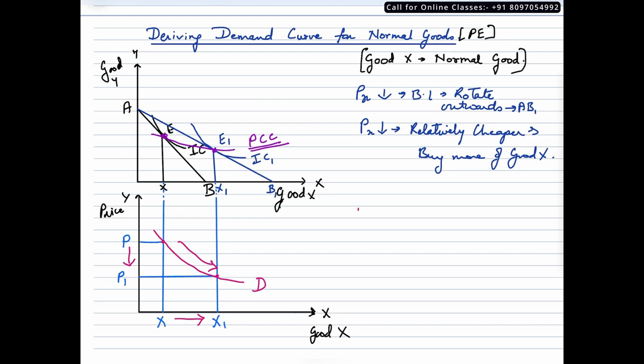that for normal goods, the demand curve is a downward sloping curve.